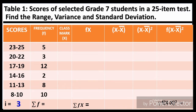If we count 8 to 10, we have 8, 9, 10 — that's 3 numbers. And 23 to 25: we count 23, 24, 25 — also 3. Therefore, the class interval is 3. The frequencies are 5, 3, 12, 2, 8, and 10.